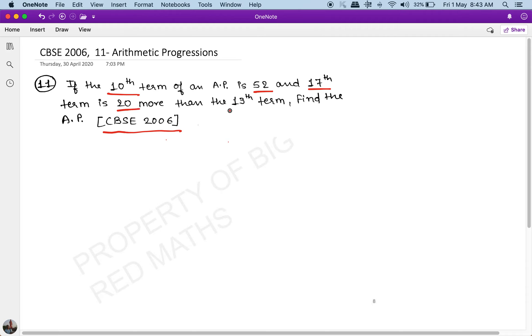So condition one given to us is: the 10th term equals a₁₀, and a₁₀ = a + 9d = 52. This is given.